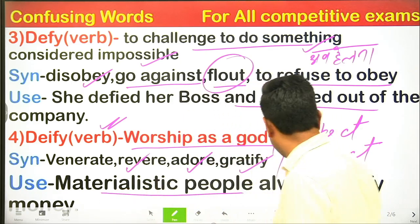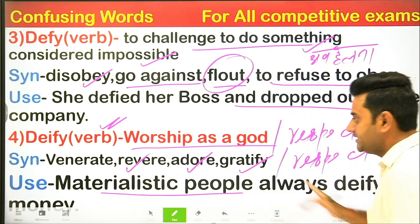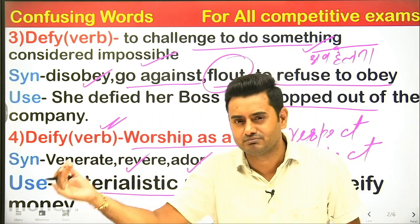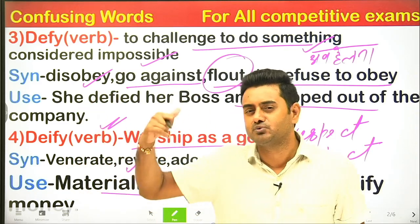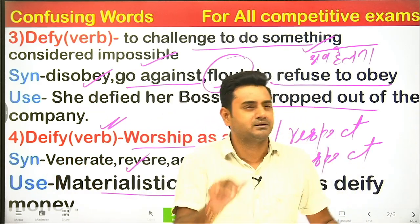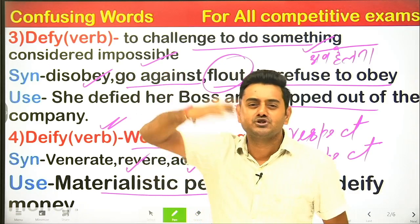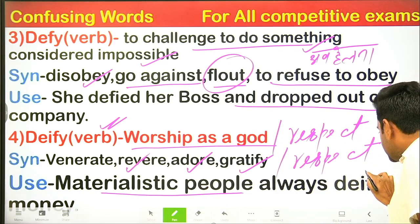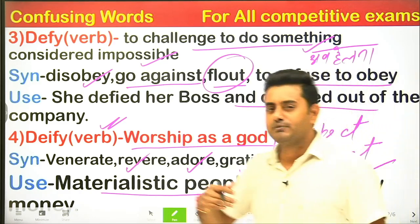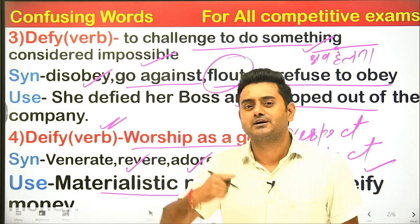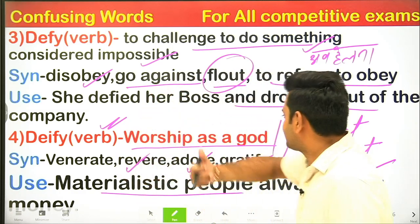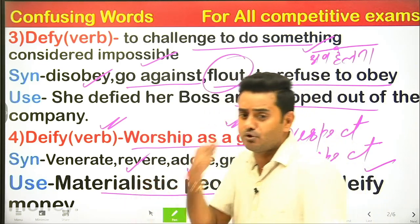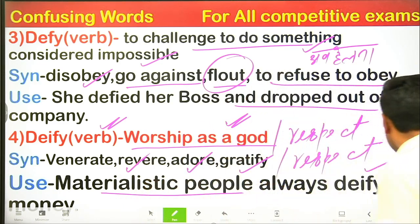Example: 'Materialistic people always deify money.' Meaning: People who are materialistic worship money like a god. Generally, those who are spiritually inclined do not deify material things. To treat any person or thing like a god, to love them excessively — that is deify.